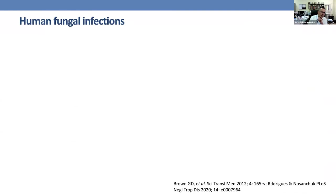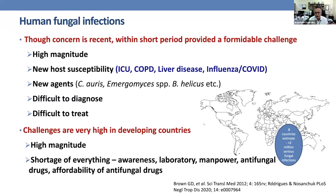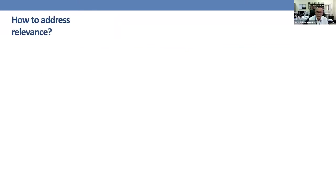Looking directly at human fungal infection: though concern is recent, it presents a formidable challenge due to its high magnitude. We are seeing new susceptibility patterns and new agents. Fungus is difficult to diagnose and difficult to treat. In developing countries, the problems are much worse because of shortage of everything — awareness, laboratory capacity, manpower, and antifungal drugs. Even when drugs are available, people cannot afford them. Estimates across eight Asian countries show more than 2 million serious human infections.